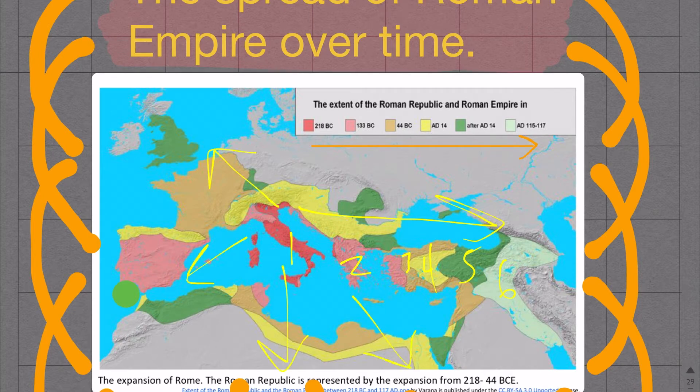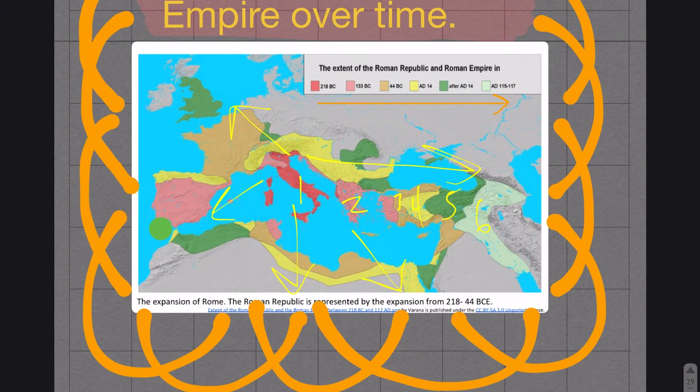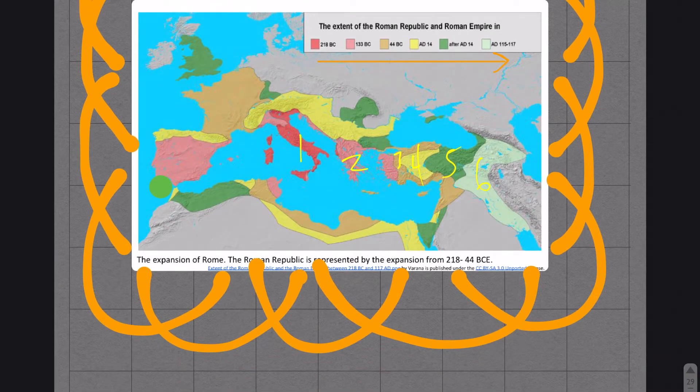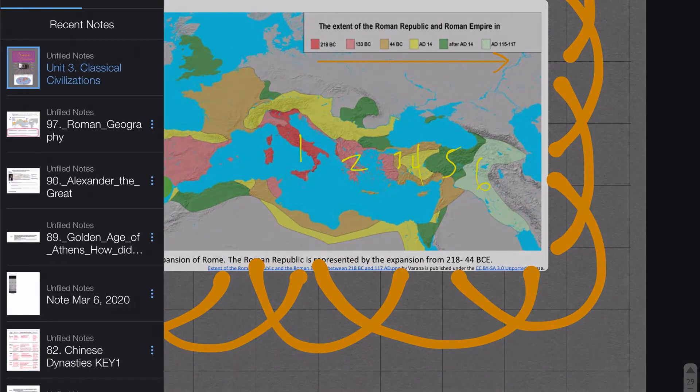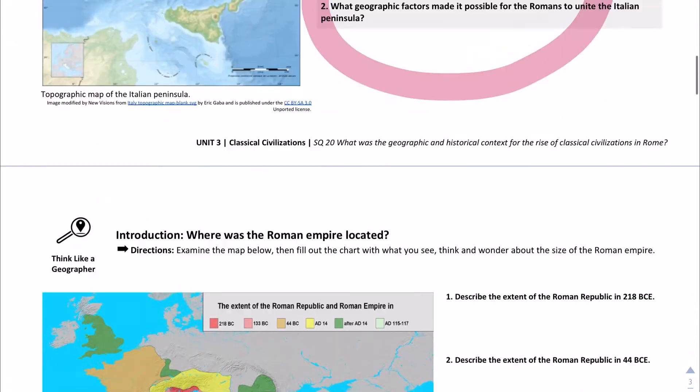You can see they're expanding outward in all directions. The expansion of the Roman Empire or Roman Republic is moving outward from the Mediterranean Sea, and a lot of it's going to have to do with the geography. We have access to this amazing body of water that's going to be able to provide a great source of trade and other natural resources.